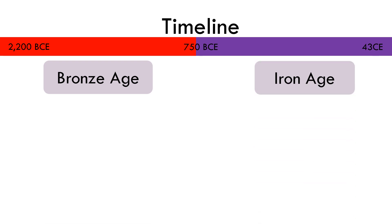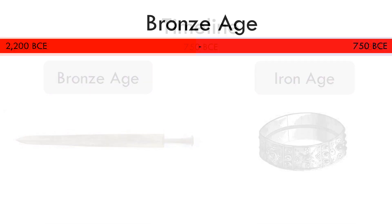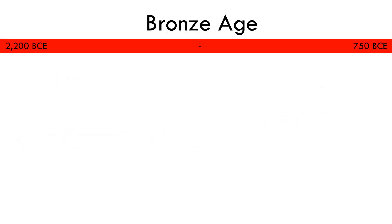Each period of time is named after the type of materials used to make tools and weapons. However, there are notable social and cultural differences also. We will begin by looking at the Bronze Age, which began around 2200 BCE and ended around 750 BCE.